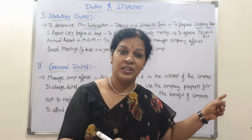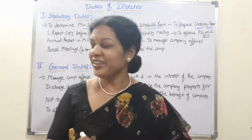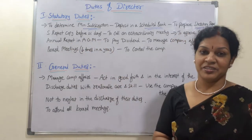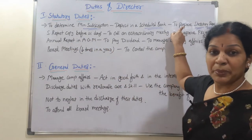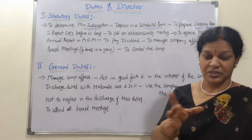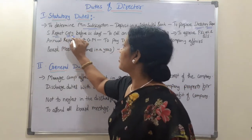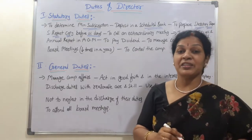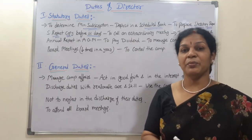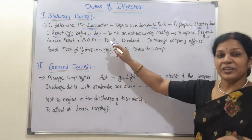The statutory report copy must be circulated to all members before 21 days — that is, within a period of 21 days prior to any meeting. The directors must ensure that every member receives this copy within that 21-day window.